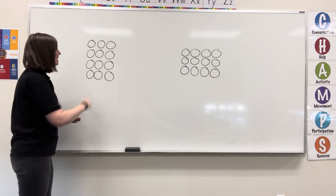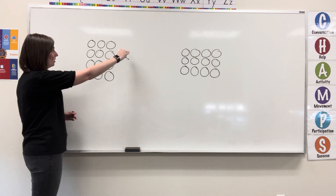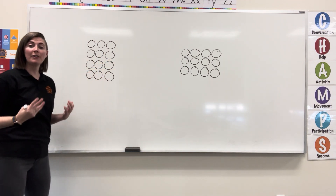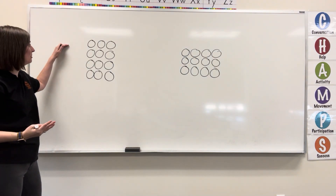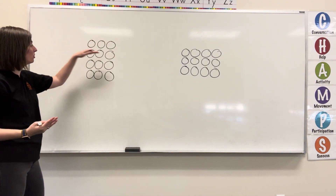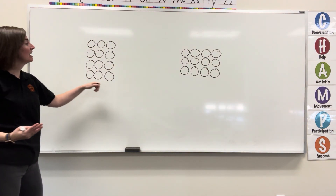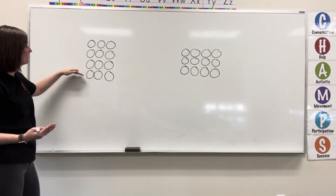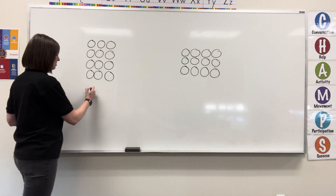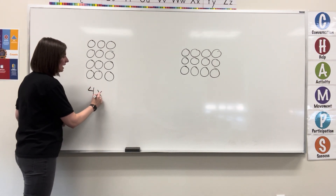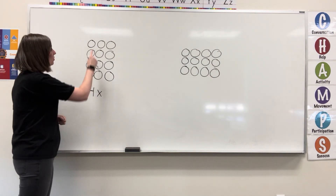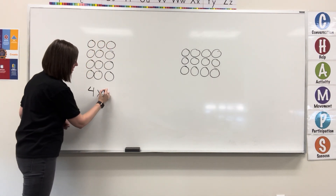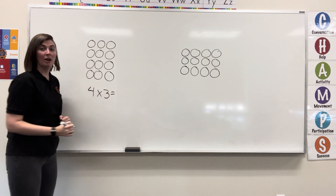Now, each row has a certain amount in it. So, to find the first factor, we're going to look at how many total rows we have. In this one, I have 1, 2, 3, 4 rows. And there are 1, 2, 3 things in each row.